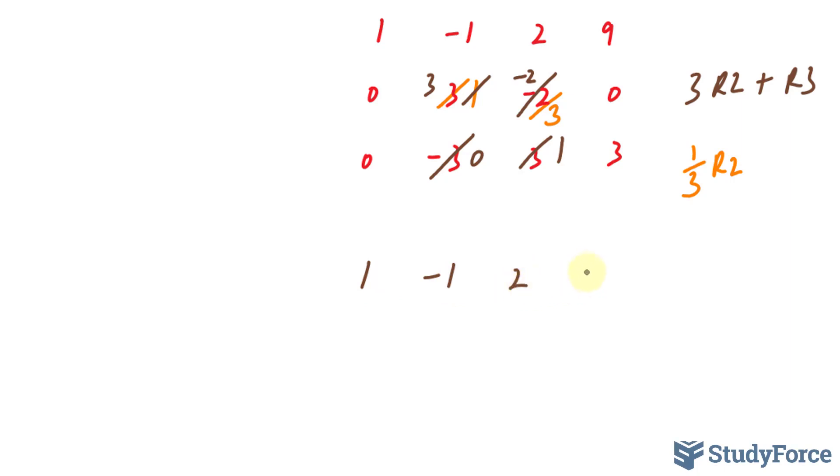1, negative 1, 2, and 9, where 1 stays the way it is. 0, 1, negative 2 over 3, and 0. Remember, we're looking at the orange numbers. And finally, 0, 0, 1, and 3.